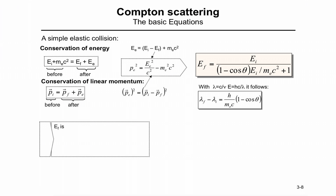Looking at special cases: the final energy is maximal when theta equals zero — then the denominator term vanishes and EF equals EI, as if the electron doesn't exist. The energy is minimal when theta equals pi (backscattering), and we can calculate the minimum energy from that expression by setting cosine theta equal to minus one, giving the factor of two in the denominator. These are two particular cases of interest for the formula.